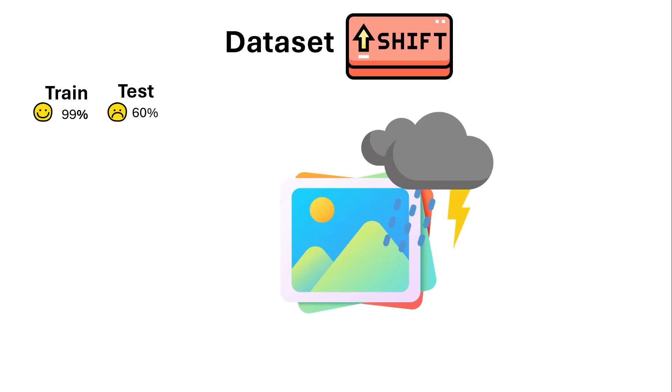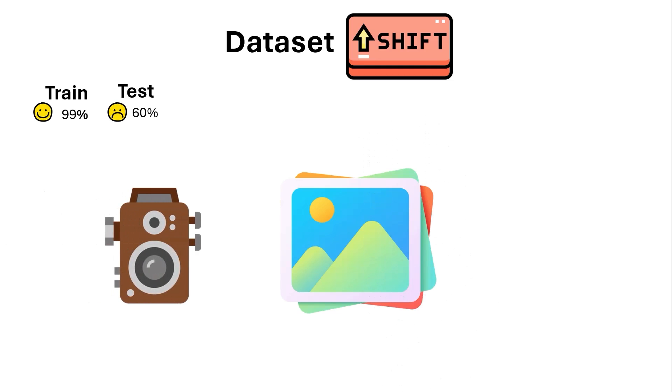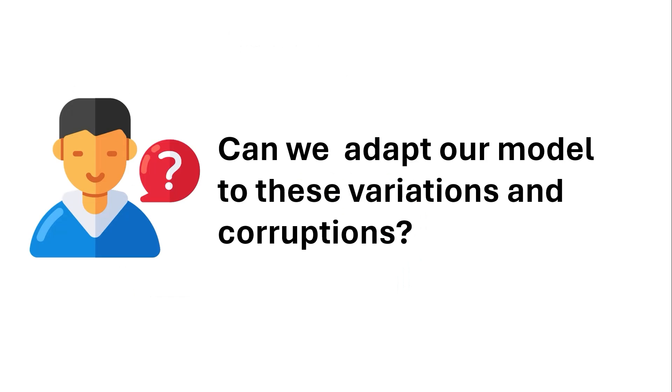Let's say the weather becomes different, it becomes rainy, and since the model has not seen any images with rainy data then it might not behave very strong. Or the camera that is recording the image might become old and the image captures might be corrupted, blurry or noisy. So the question we can ask ourselves is can we adapt our model to these variations and corruptions and have a model to be robust against all these corruptions?